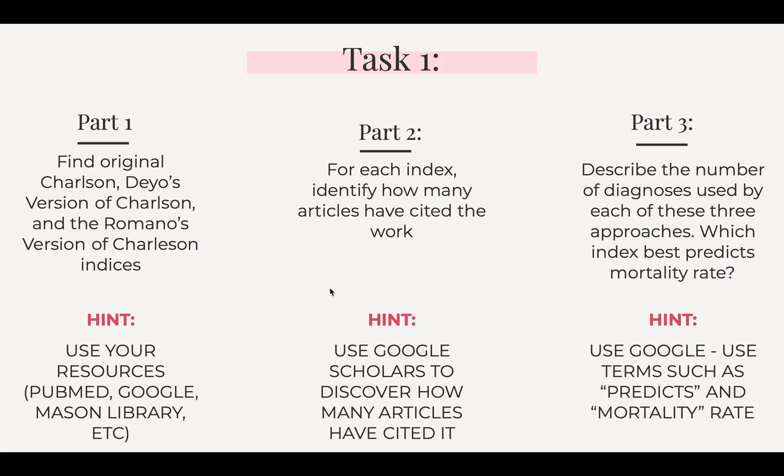For Task One, there are three parts. First, you're supposed to find the original Charlson's index, Deyo's version, and Romano's version of the Charlson's indexes. My biggest hint is to use your resources — there's a lot out there on Google, on PubMed, and on the Mason library that you pay for. Just look up these different indexes and there's a lot to find.